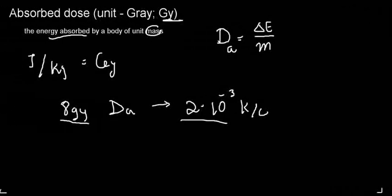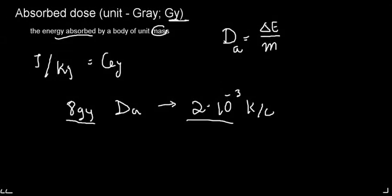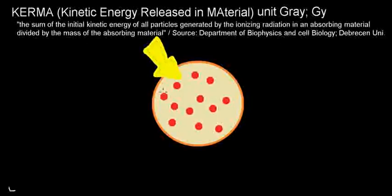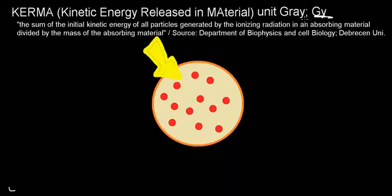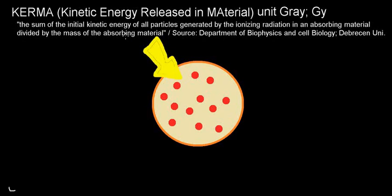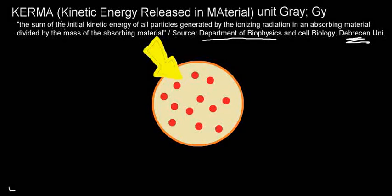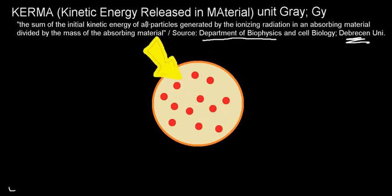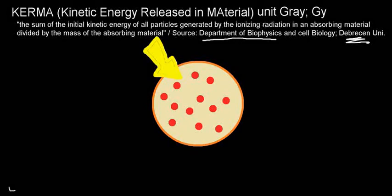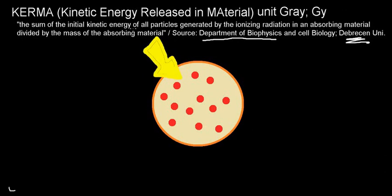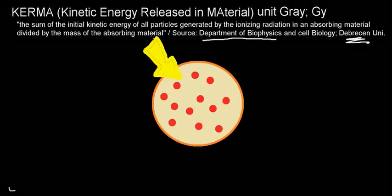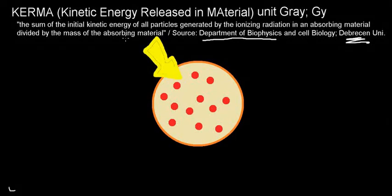The next concept is KERMA — kinetic energy released in material — and its unit is also the gray. The definition is: the sum of the initial kinetic energies of all particles generated by the ionizing radiation in an absorbing material, divided by the mass of the absorbing material.